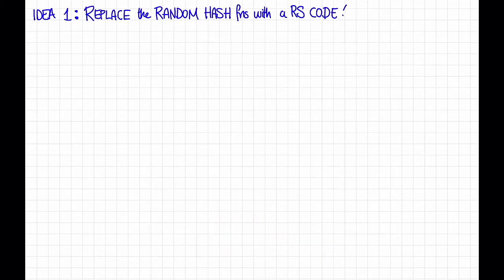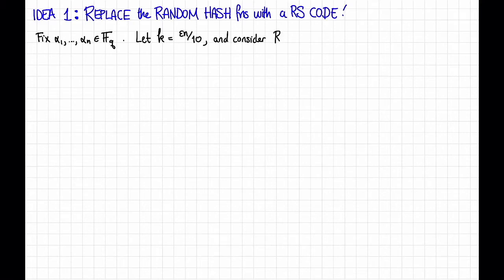Here's the first way. We're going to use exactly the same data structure as count min sketch, except we're going to replace the random hash functions with a Reed-Solomon code. More precisely, let's fix some distinct evaluation points alpha_1 through alpha_n in F_q. Now let's consider a Reed-Solomon code of rate, say, epsilon over 10, where epsilon is the same epsilon from the definition of the heavy hitters problem. Let's also choose n to be equal to q, so this is just a full-length Reed-Solomon code.